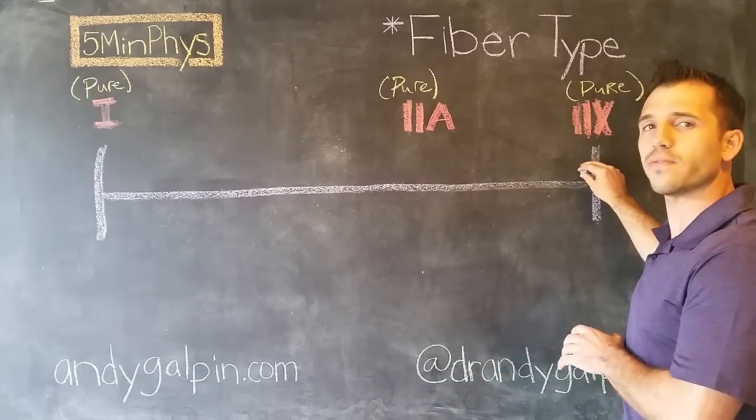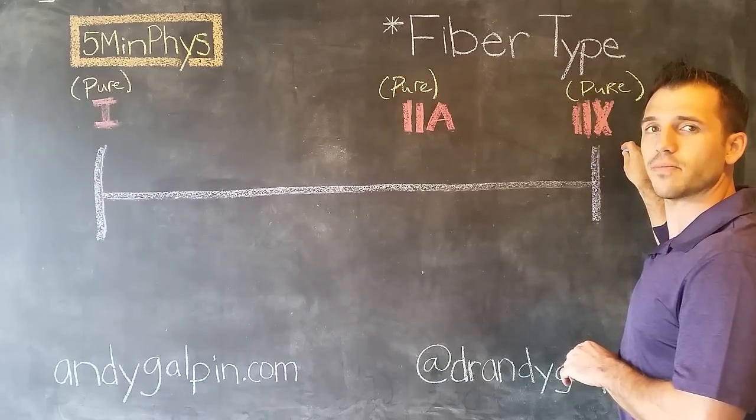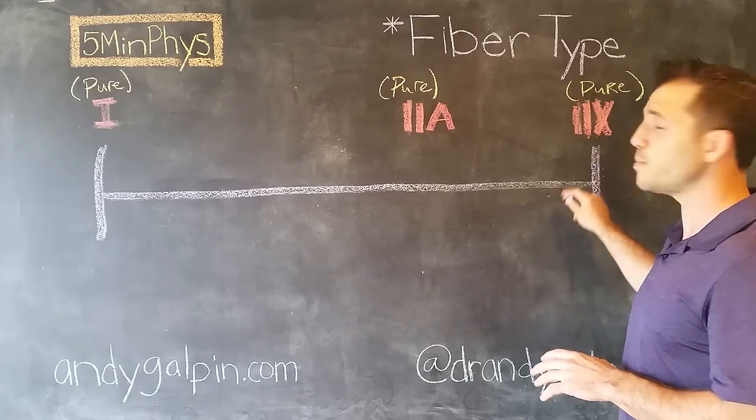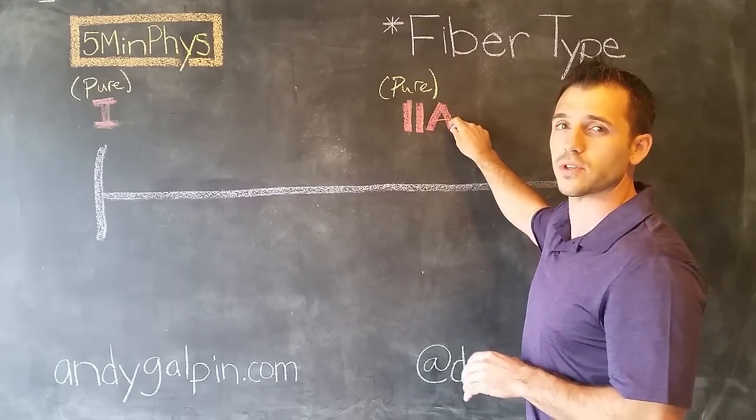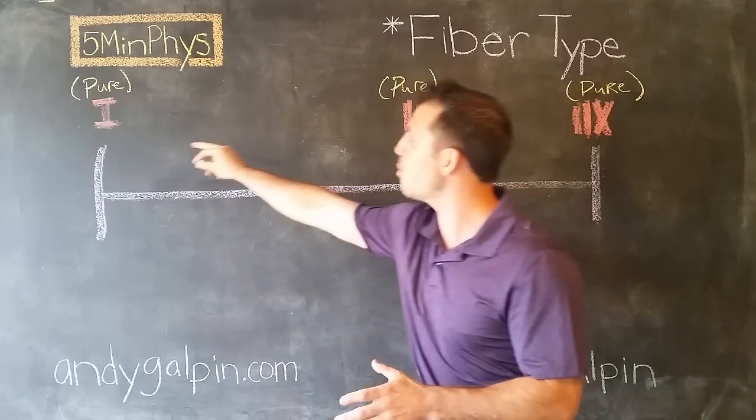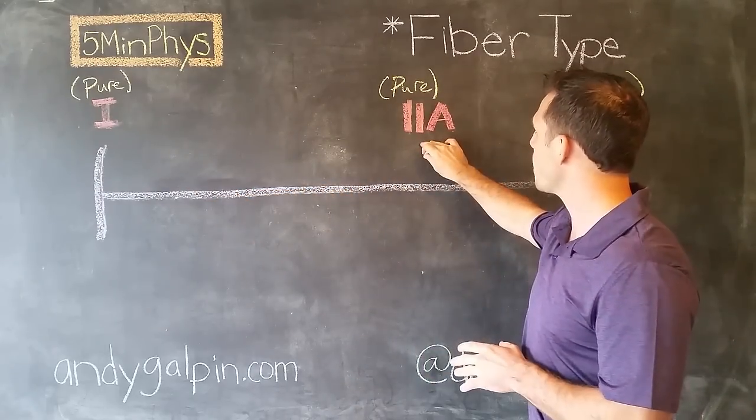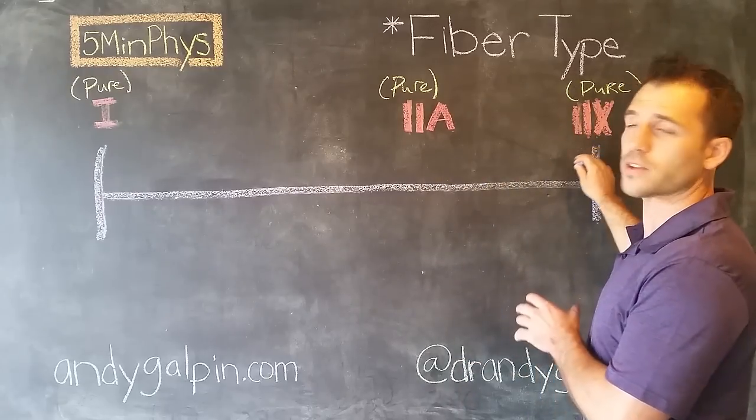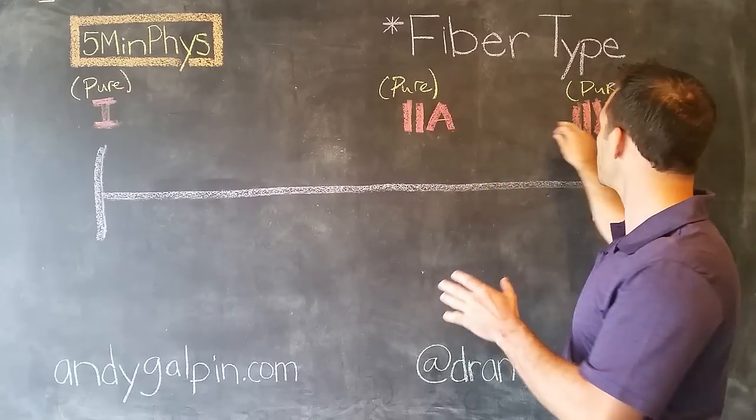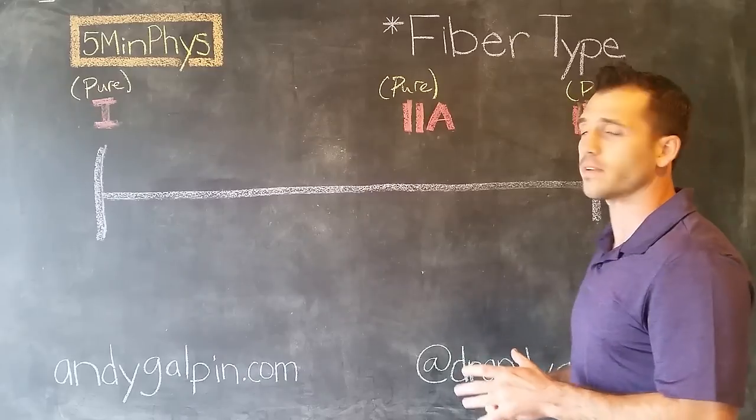Then we have a third fiber type, which are your 2Xs. These are also fast twitch, but these are even more fast twitch than your 2As. So you have type 1s, type 2As which are fast twitch, and type 2Xs which are really fast twitch. The 2As are pretty close to the 2Xs, a little bit different.